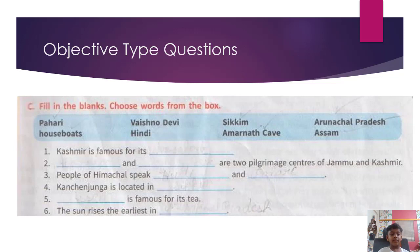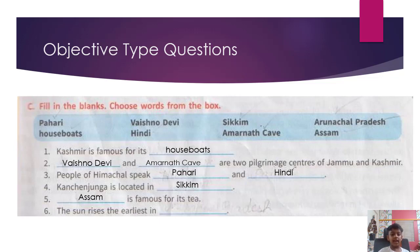C. Fill in the blanks. Choose words from the box. Kashmir is famous for its houseboats. Vaishno Devi and Amarnath cave are two pilgrimage centers of Jammu and Kashmir. People of Himachal speak Pahari and Hindi. Kanchenjunga is located in Sikkim. Assam is famous for its tea.